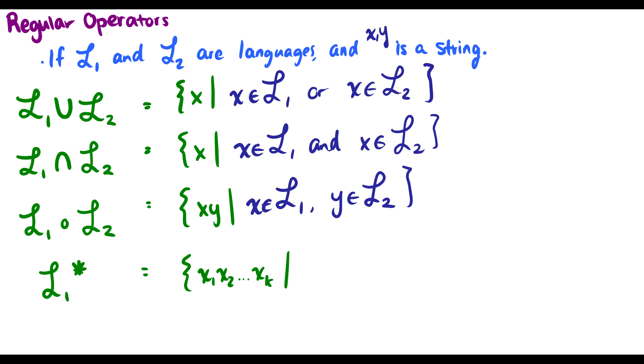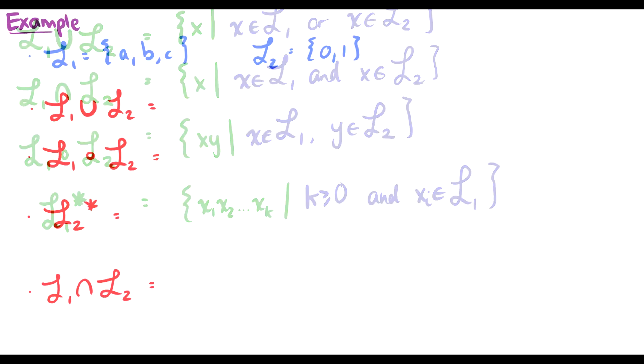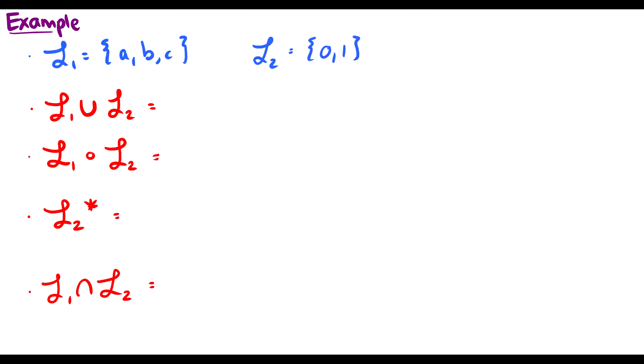Then we have the star operator. So the star operator is very special, because what the star operator does is it lets us take any number of the string in the language. So for instance, this is the string X1, X2, all the way up to XK, where K has to be greater or equal to zero. And each of our strings is in our language.